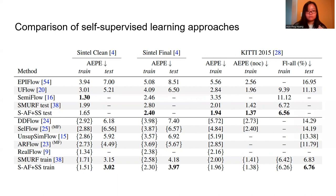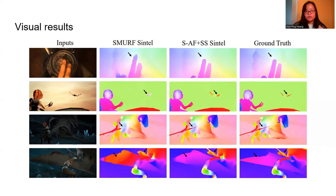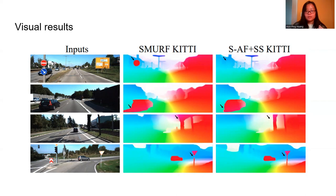Our method performs better on shadows, small or thin objects, and things with motion blur. The results show that purely self-supervised methods like SMERF may predict incorrect flow due to optimizing the photometric loss.